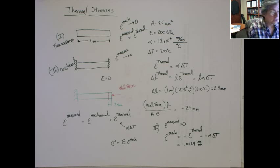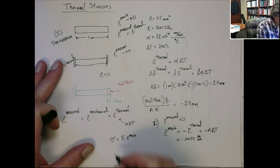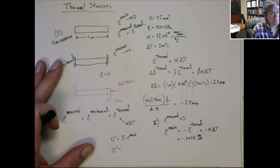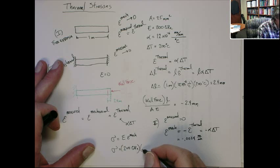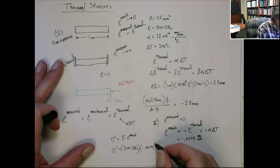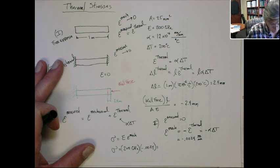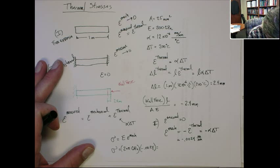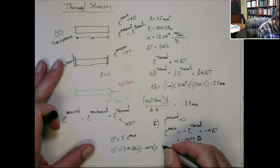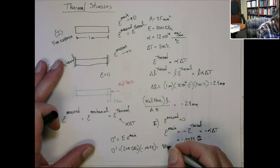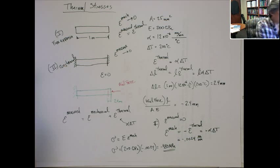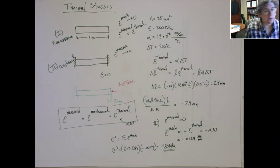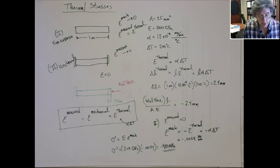Now that you know that strain, you can take that, put it into here, and get the actual stress. So the stress in that specimen is the Young's modulus of 200 gigapascals times the strain, which is minus 0.0024. And that's going to give us a negative stress. You can see that allows me to figure out the sign and all those sorts of things.